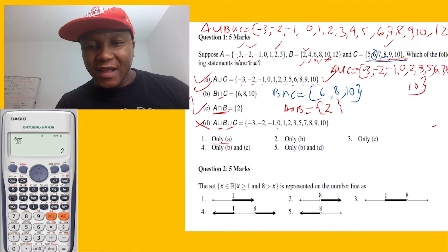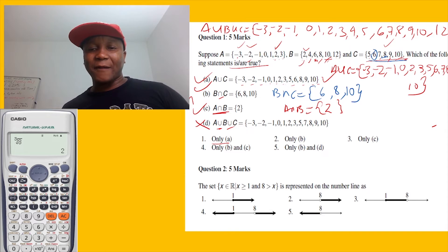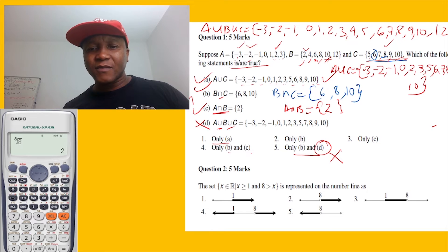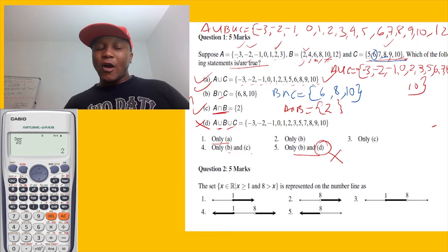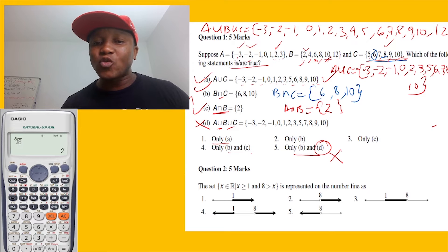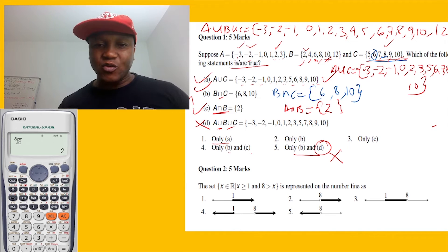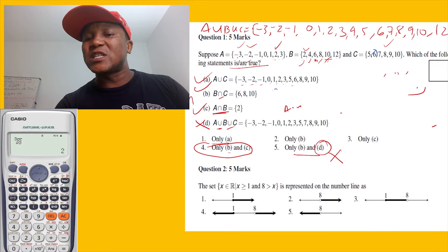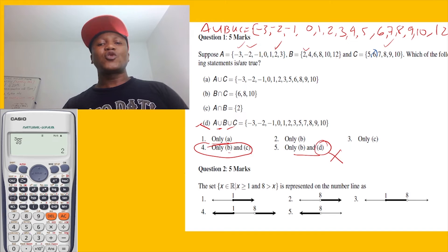Checking this against the options — this statement D is not true. The answer options say B and C are correct. I expected A to be true as well, but that's a contradiction. So I need to recheck where I made a mistake. Let me go through it again very quickly.